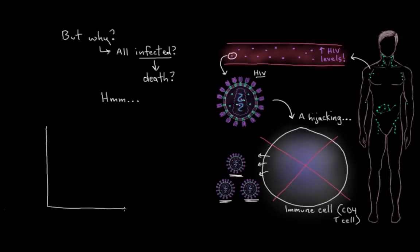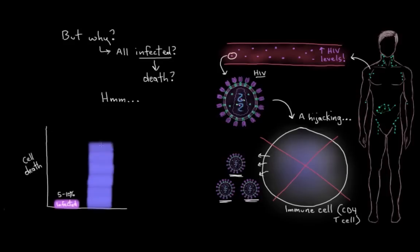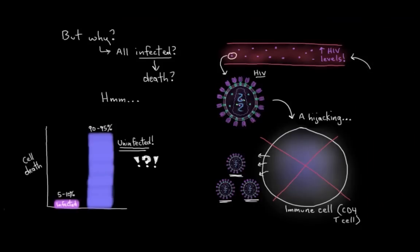And it turns out that in an HIV infection, only about 5-10% of the immune cells that end up dying off are actually HIV infected. The remaining 90-95% that die off are not even infected. That's ridiculous, right? How is that even possible? Well, let's look at that a little bit.